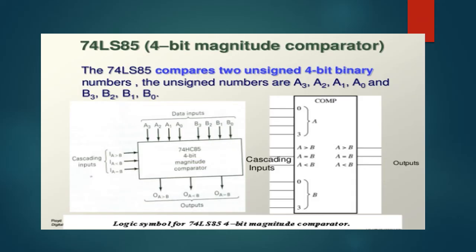And we have another basic comparator that is 4-bit magnitude comparator. Its IC name is 74LS85. It compares two unsigned 4-bit binary numbers. The unsigned numbers are A3, A2, A1, A0 and B3, B2, B1 and B0. The block diagram of 74LS85 4-bit magnitude comparator is shown in the figure.